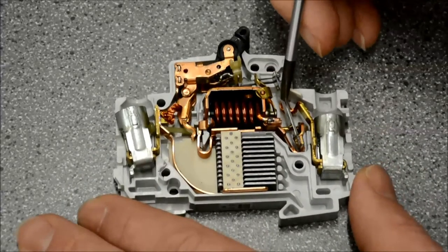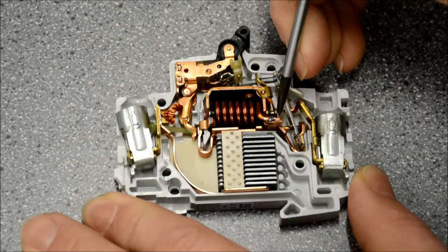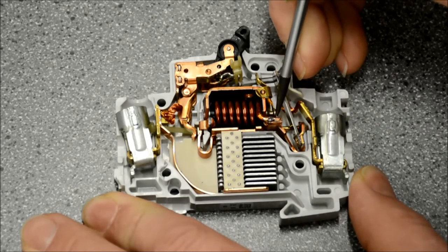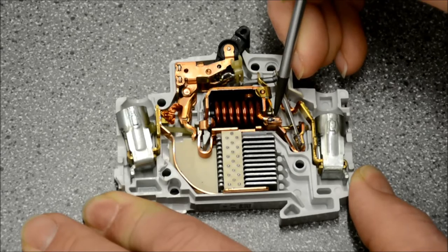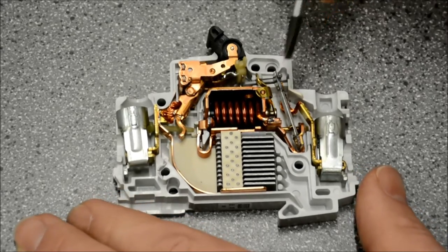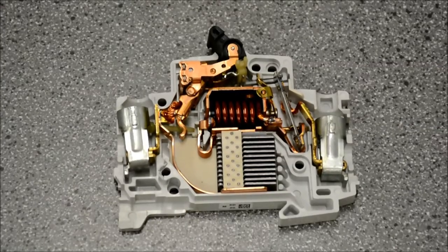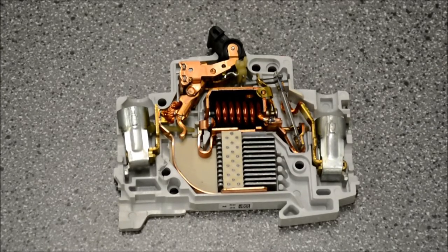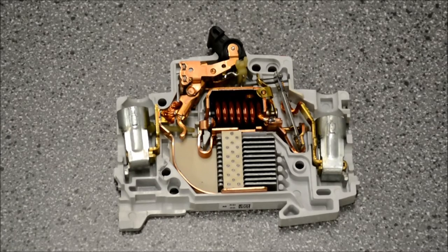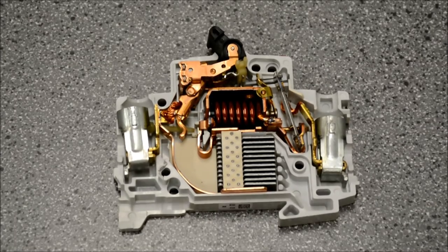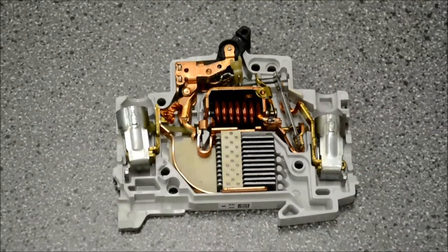If the current is sufficient to cause this plunger to move, it will activate this lever and activate the trip mechanism. We can effectively measure the strength of the magnetic field, and if you'll remember, the strength of the magnetic field is in direct relation to the amount of current flowing through the coil. In that manner, we can measure the amount of coil current that is available. So that is method number one to trip the circuit breaker.